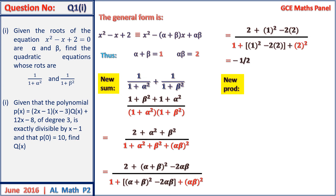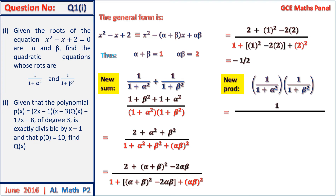We move on to look for the new product, which is 1 on 1 plus alpha squared times 1 on 1 plus beta squared. We find this same expression from the previous part of the new sum, so we put in the values and simplify to obtain the new product equal to one half.